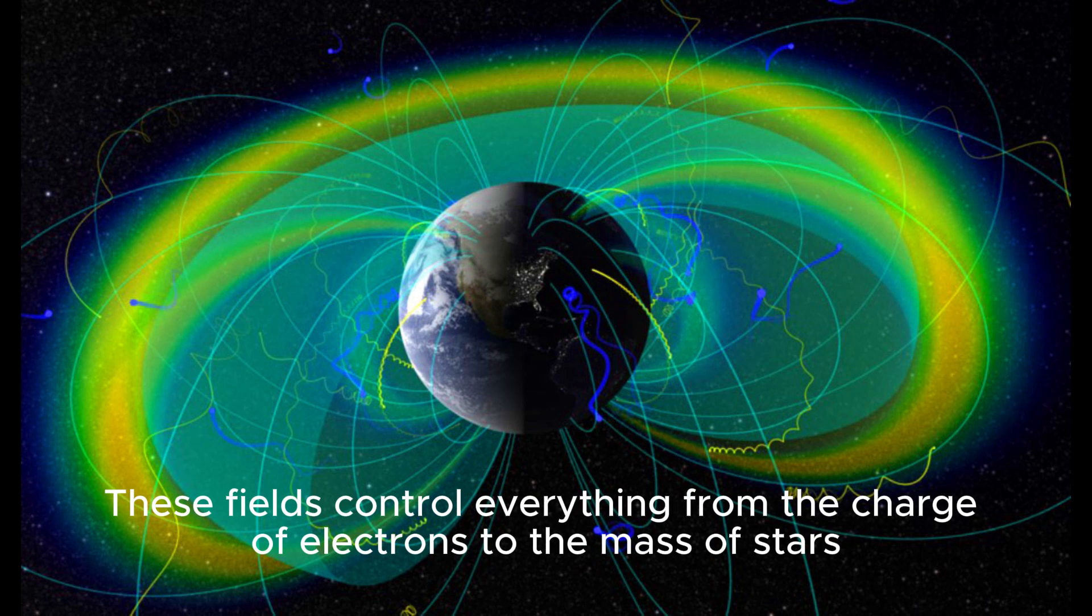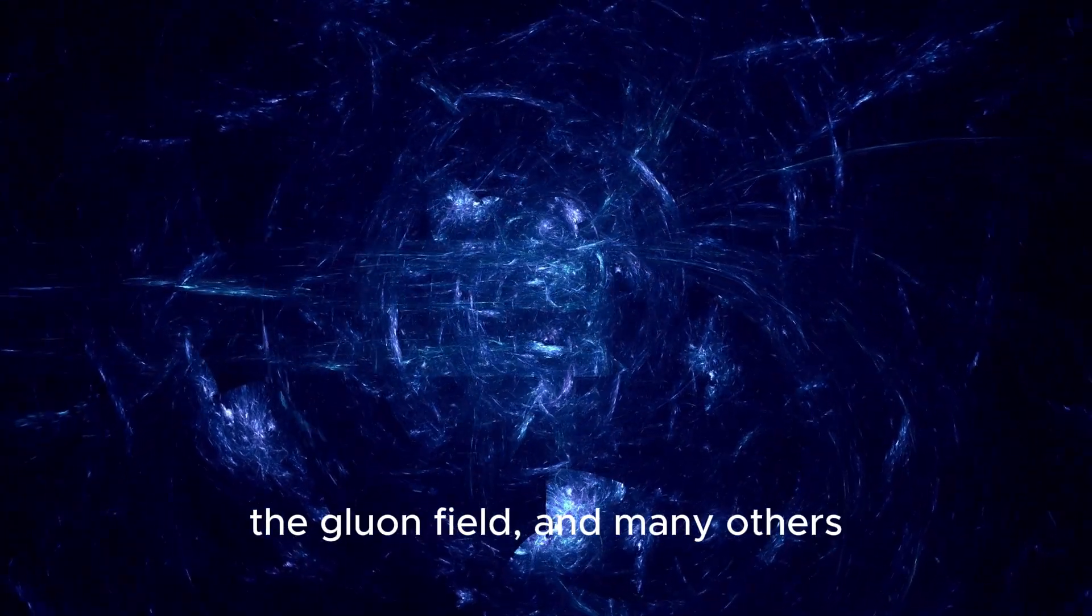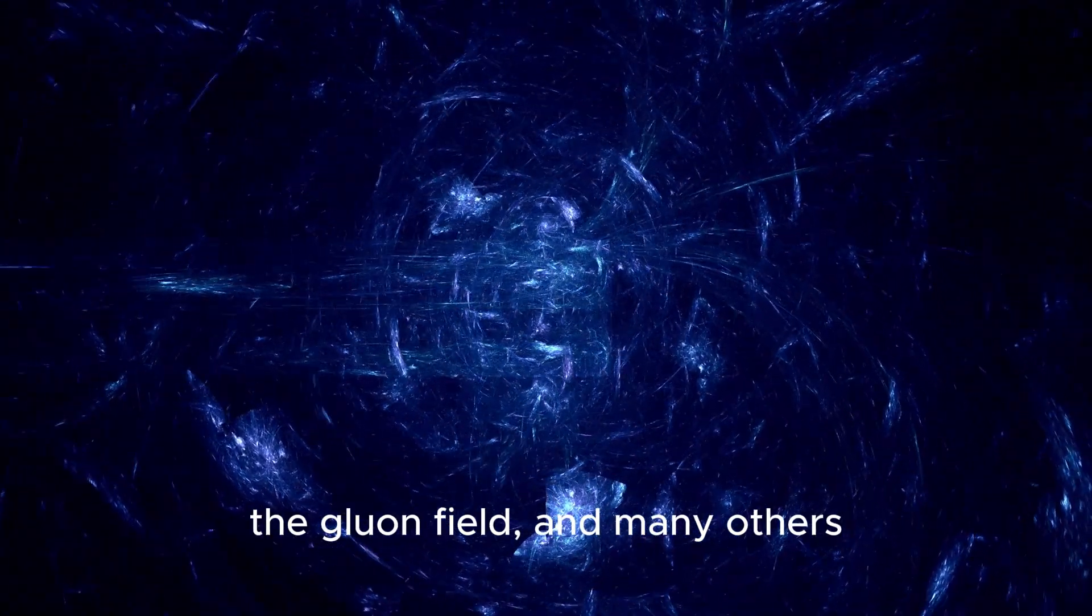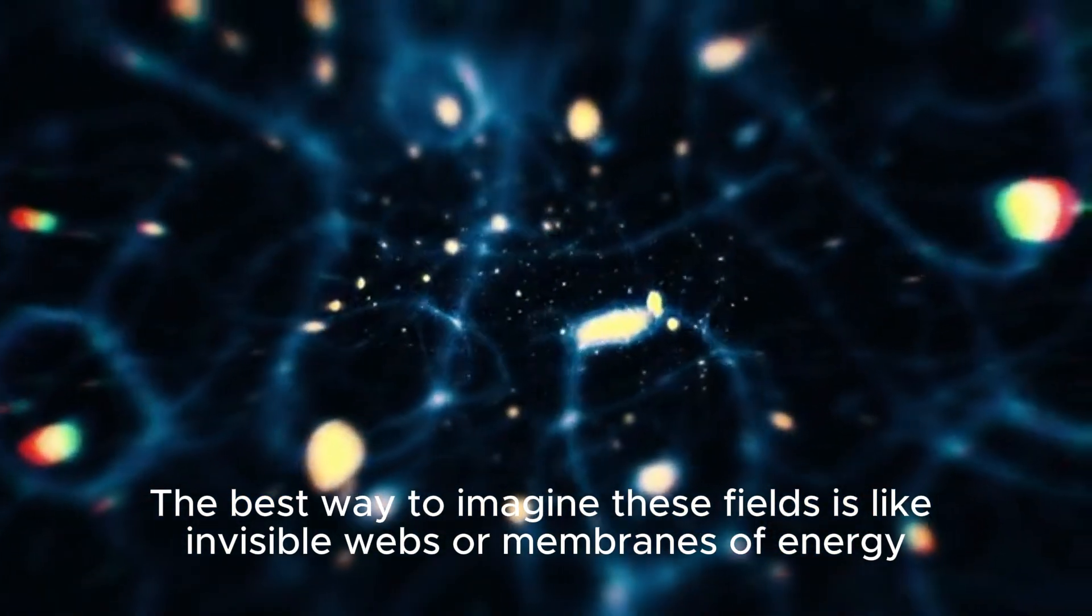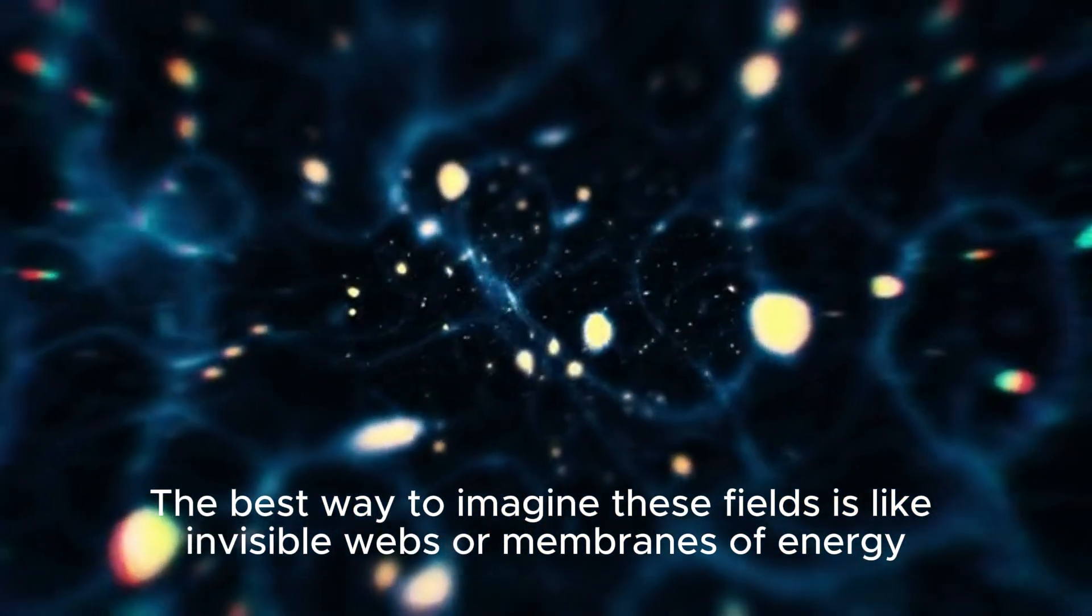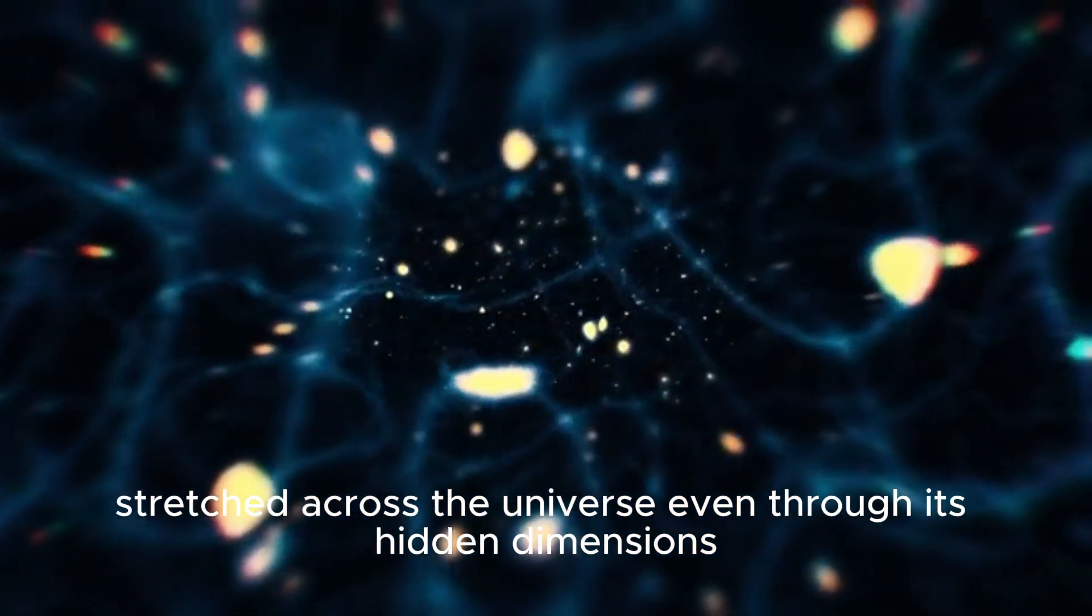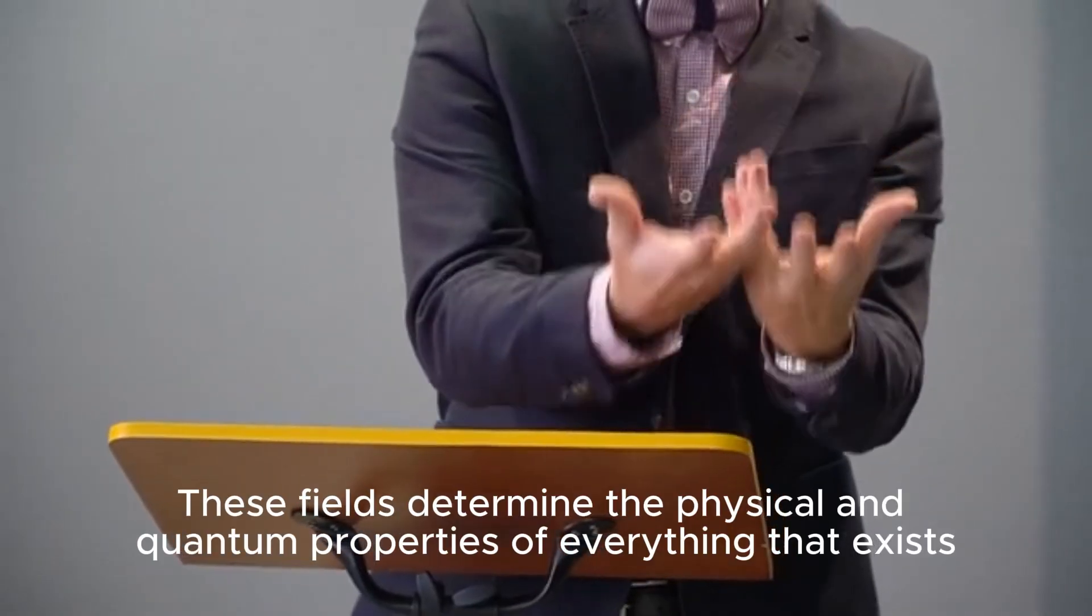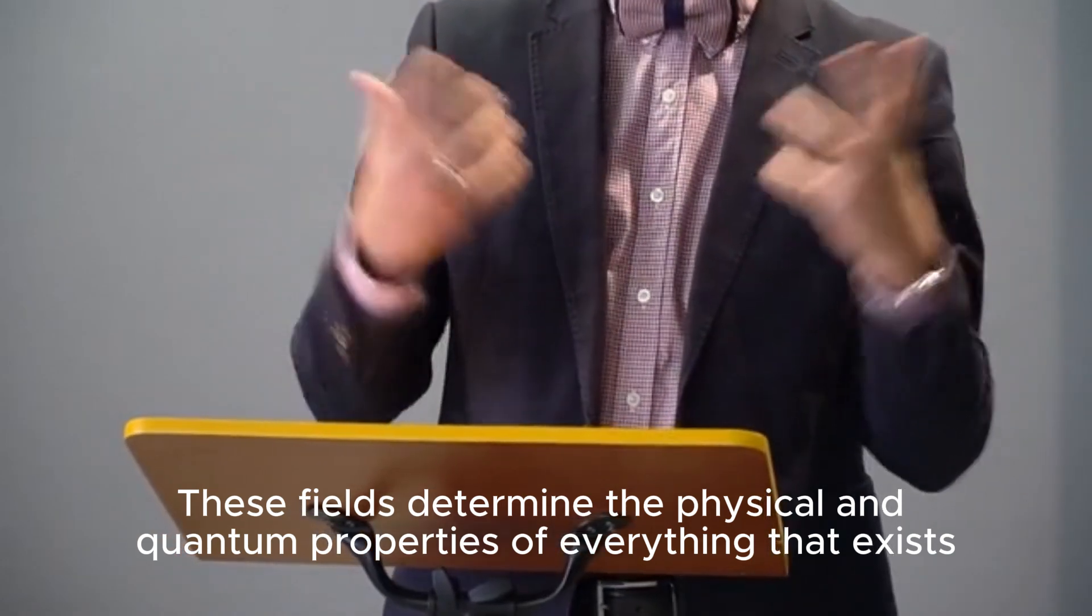These fields control everything, from the charge of electrons to the mass of stars. They include the gravitational field, the gluon field, and many others. The best way to imagine these fields is like invisible webs or membranes of energy stretched across the universe, even through its hidden dimensions. These fields determine the physical and quantum properties of everything that exists.